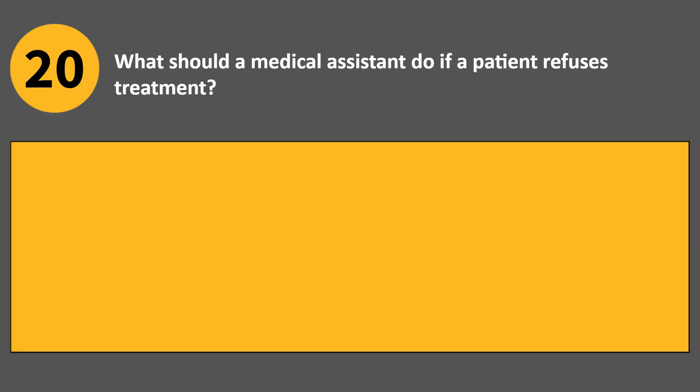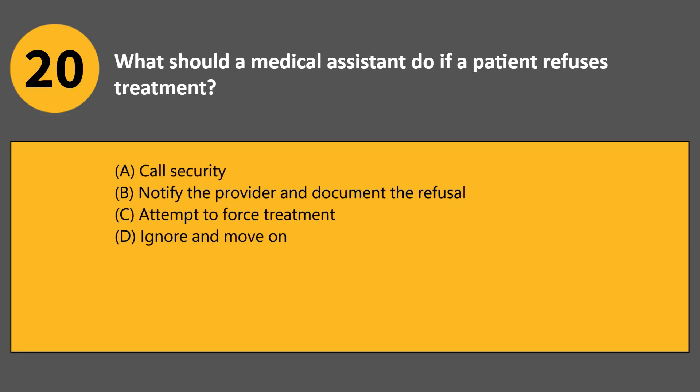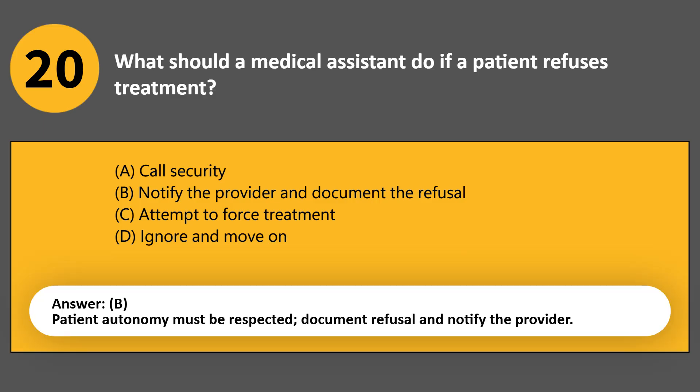What should a medical assistant do if a patient refuses treatment? A. Call security. B. Notify the provider and document the refusal. C. Attempt to force treatment. D. Ignore and move on. Answer B. Patient autonomy must be respected; document the refusal and notify the provider.